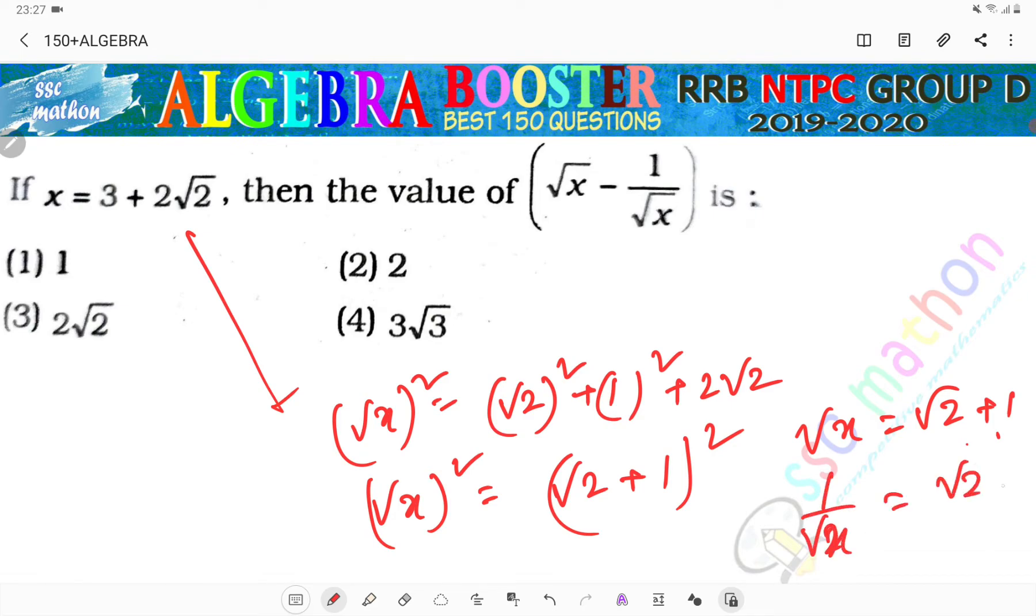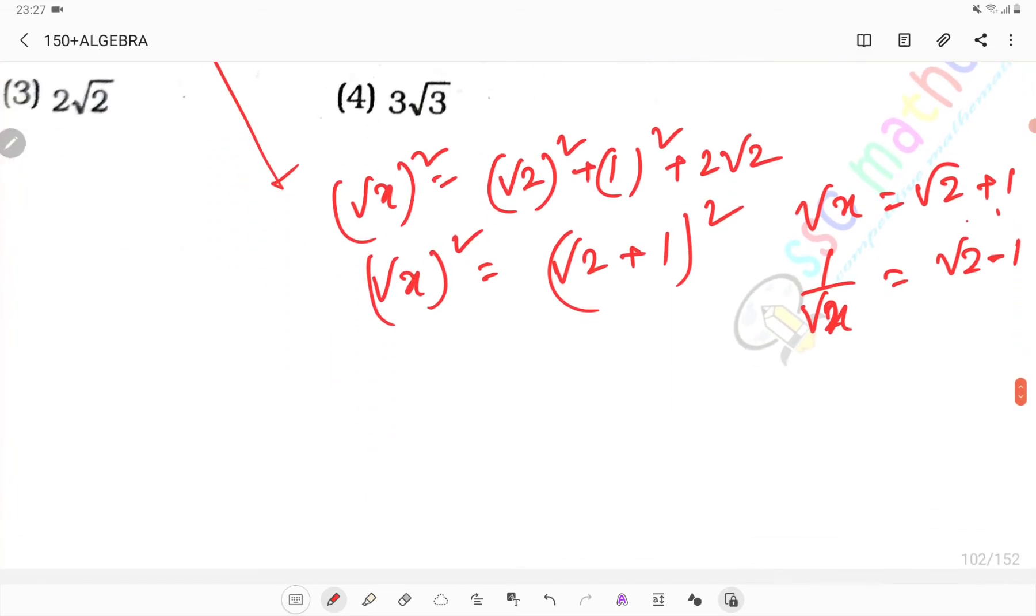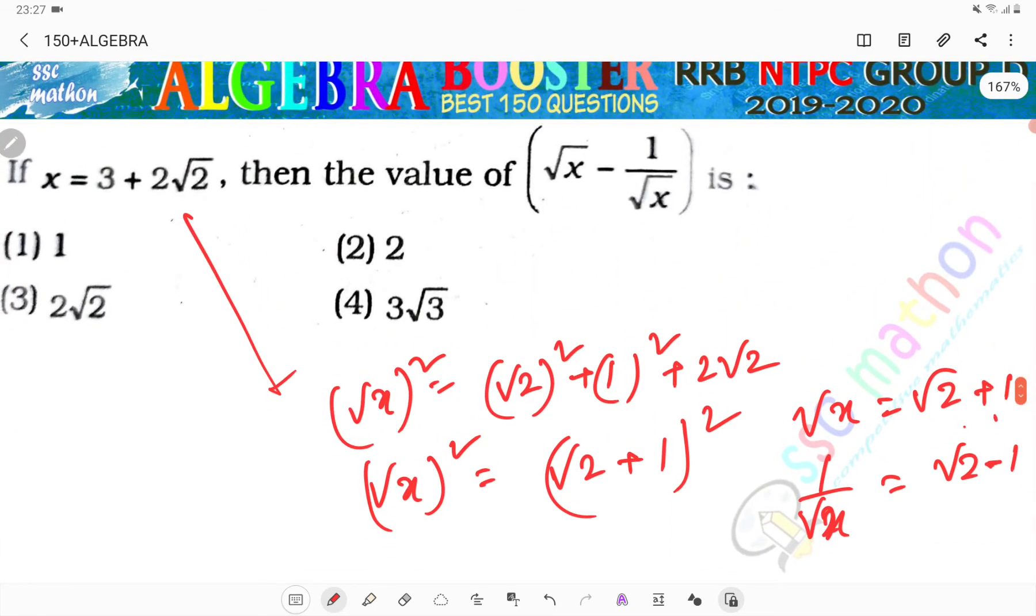After rationalizing, it becomes root 2 minus 1. Now the difference: root x minus 1 by root x equals root 2 plus 1 minus root 2 minus 1, which gives us 2. So option number 2 is the correct answer.